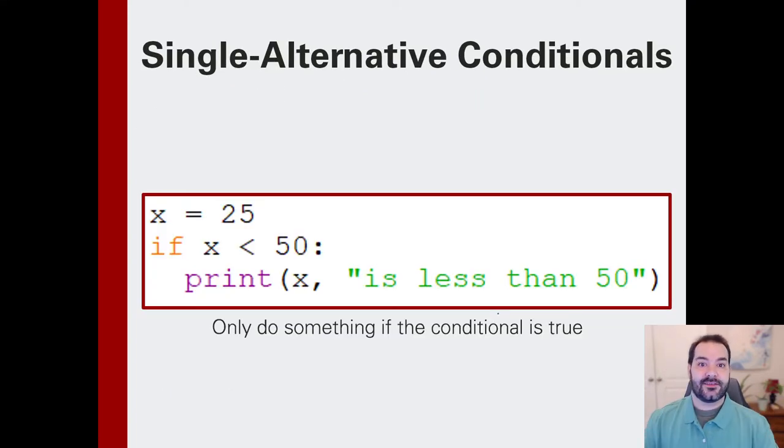To flesh this out in code, you can see if I created a variable like x, let's say x is 25. 25 is loaded into memory, and then I can do some form of a comparison. Is 25 less than 50? Well, if that is a true statement, do this print command.